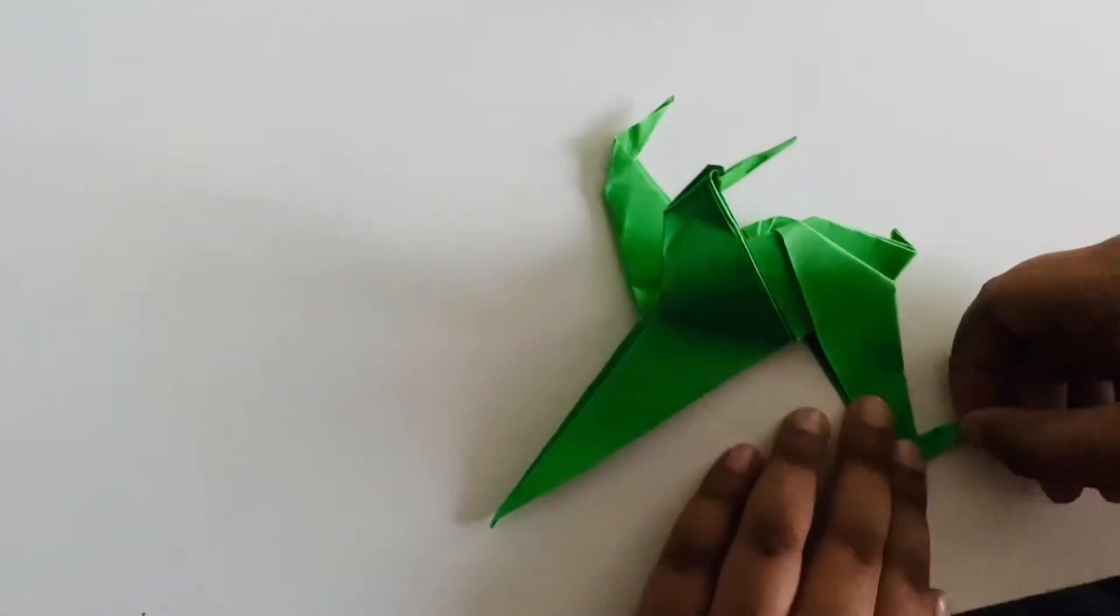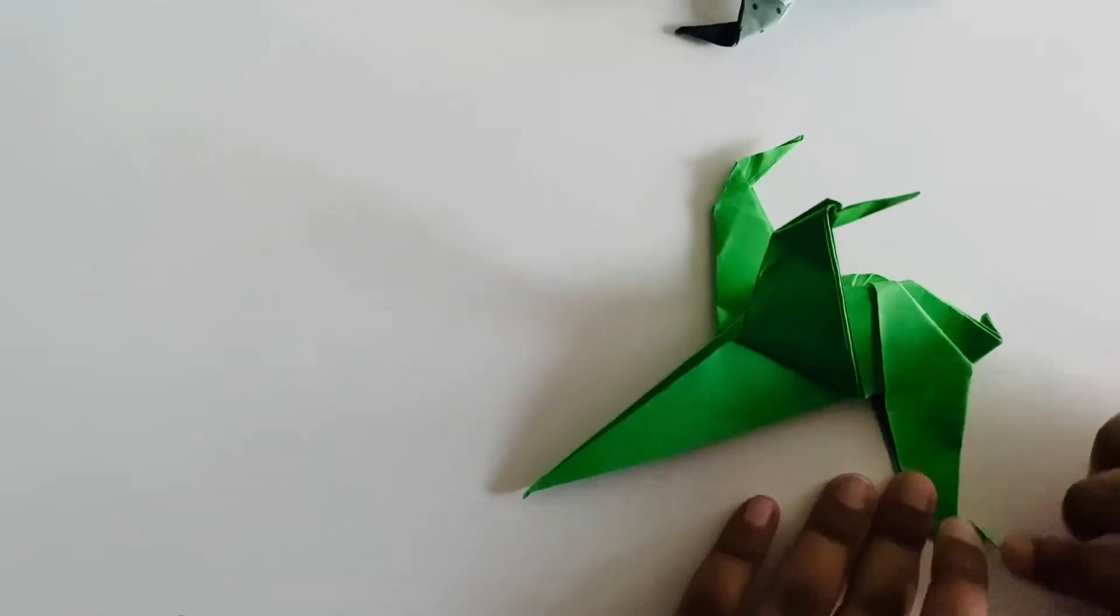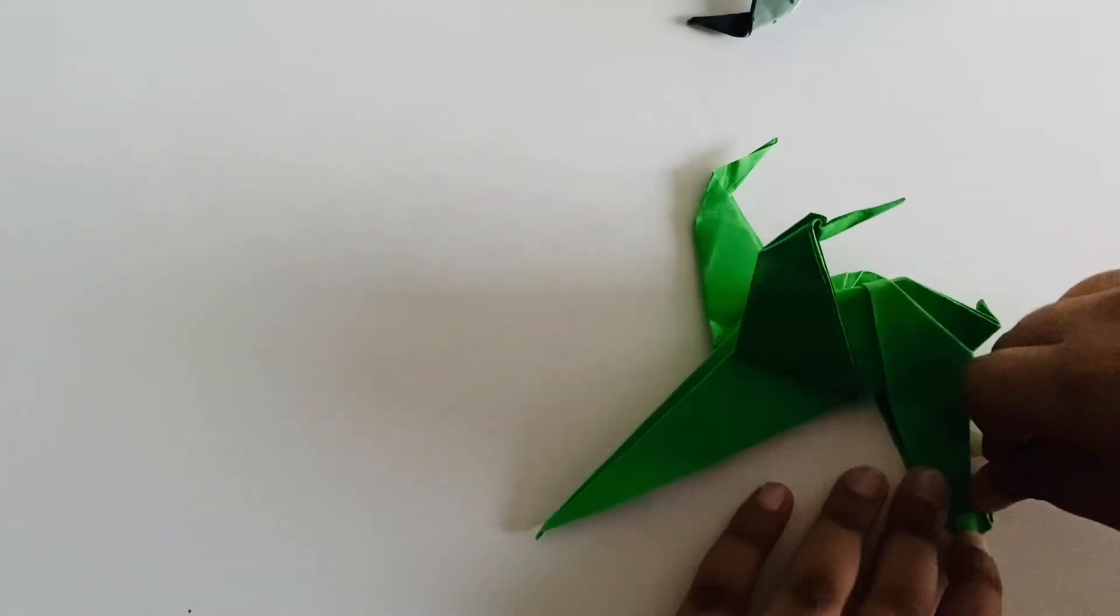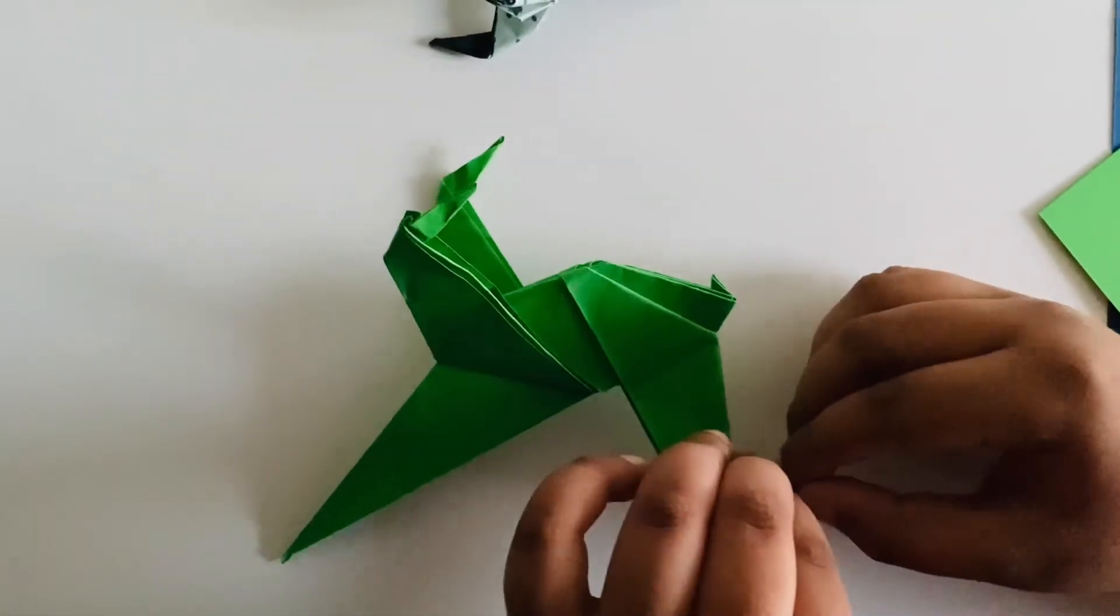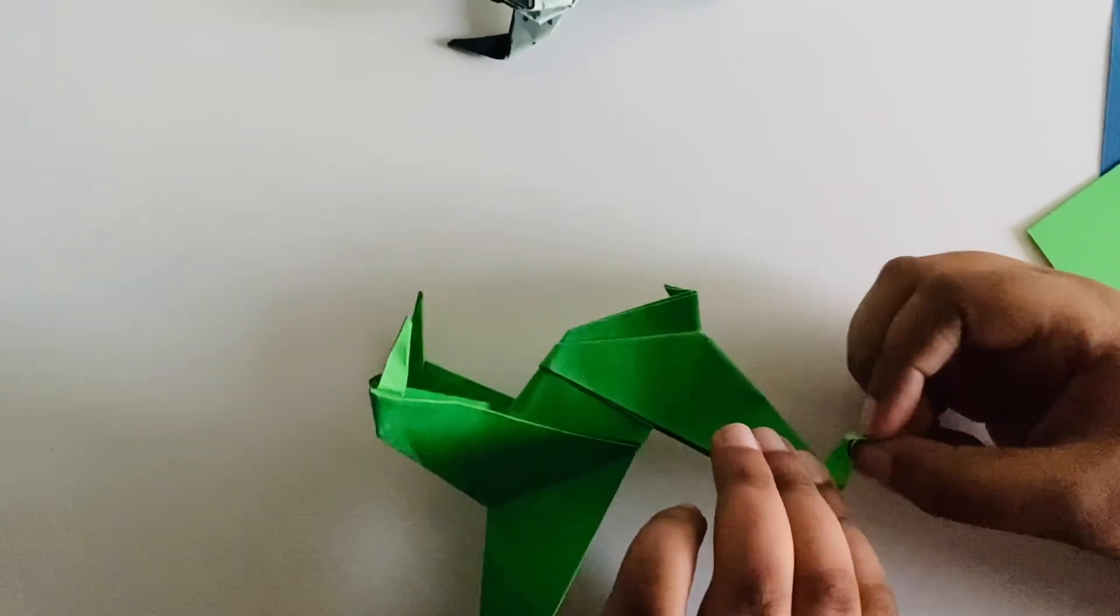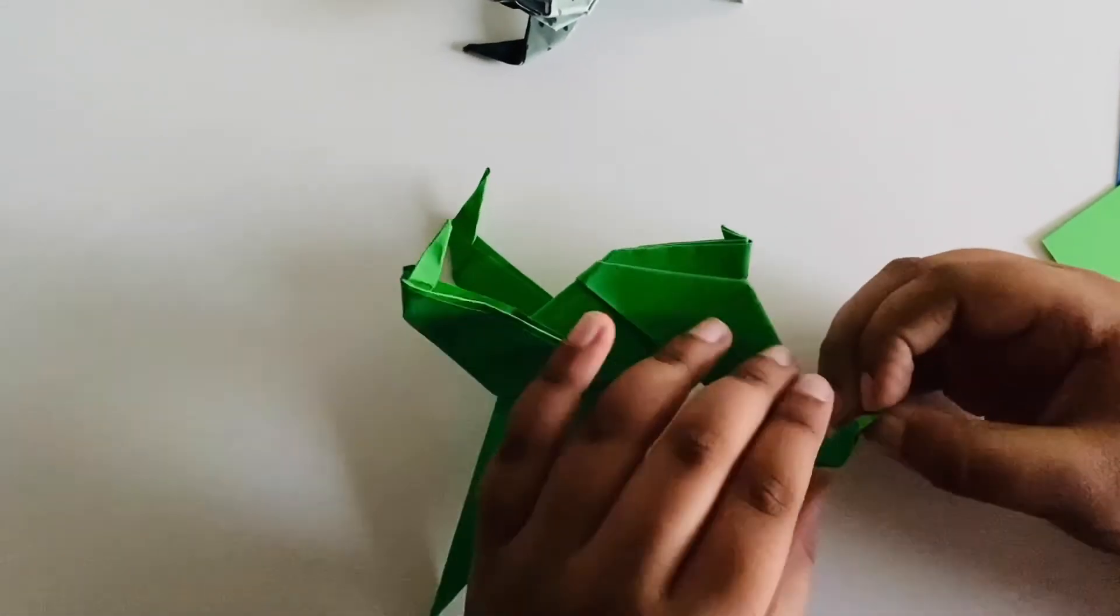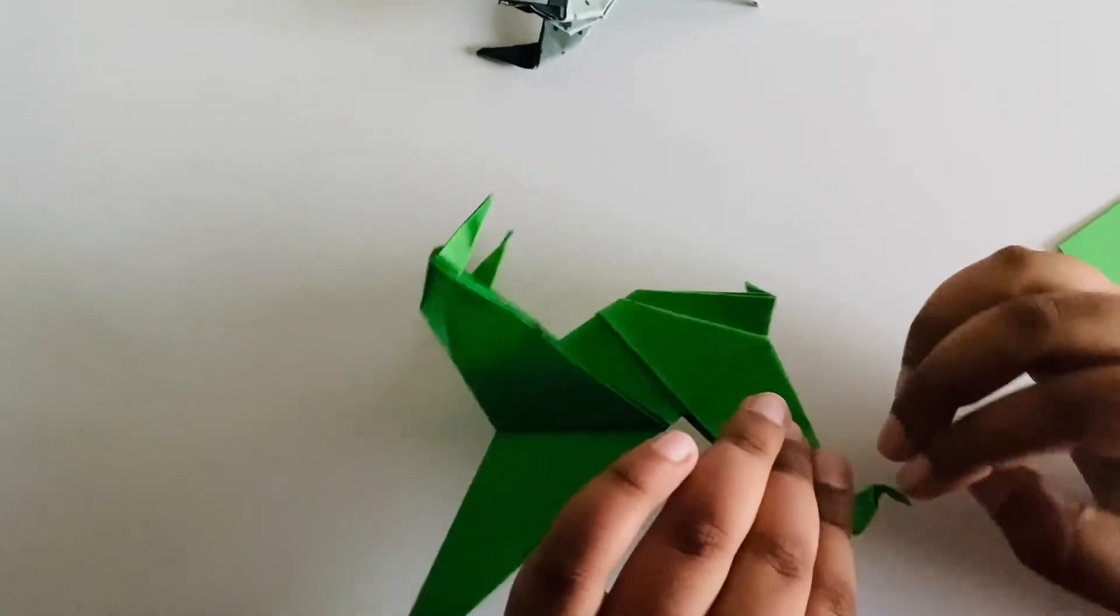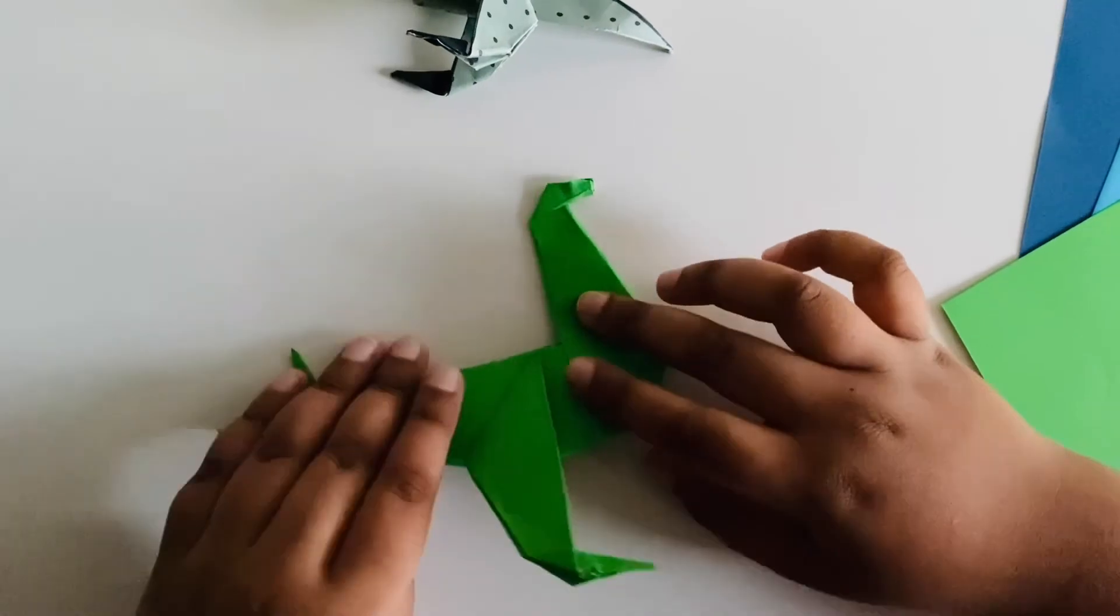Next step is to take this and fold it this way and fold it the other way. Then do the exact same process as for the legs and for the head. And then it should look like this.